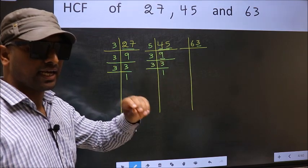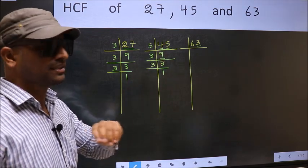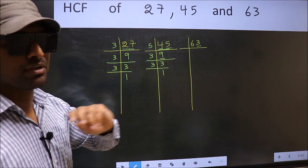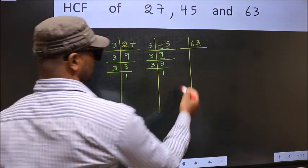We get 9 and 9 is divisible by 3. So this number is also divisible by 3. So take 3.